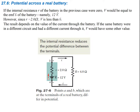The potential cost for a battery: if the internal resistance little r were 0, V would be equal to the EMF of the battery — namely 12 volts. However, since r is 2 ohms, V is going to be less than the EMF. The EMF is the driving force, and the voltage across the battery is the real voltage it's actually producing. The result depends on the value of the current through the battery — if the same battery were in a different circuit with a different current, V would be some other value. The internal resistance reduces the potential difference between the terminals.